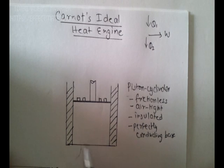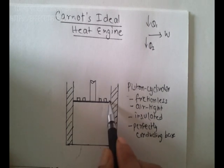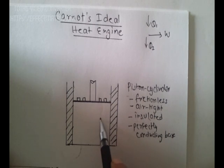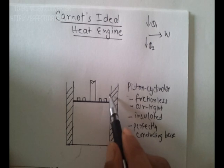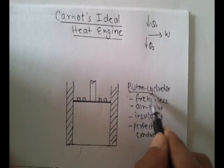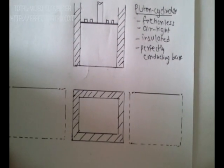So it is insulated from all three sides except for the base. This is the base which is perfectly conducting, but otherwise it is insulated from this side, this side, and from the top. There's no friction in this piston, so when the piston moves up and down there's no energy loss due to friction, and it is airtight meaning the gas doesn't escape or leak out.